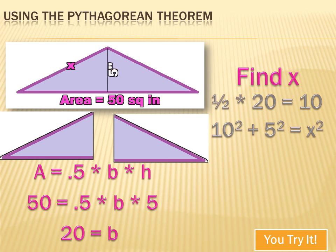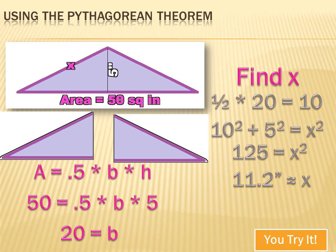Now I can use the Pythagorean theorem: 10 squared plus 5 squared equals x squared. That gives me 100 plus 25 equals x squared, so 125 equals x squared. Therefore x equals the square root of 125, or approximately 11.2 inches.